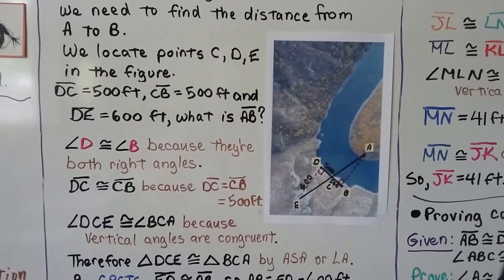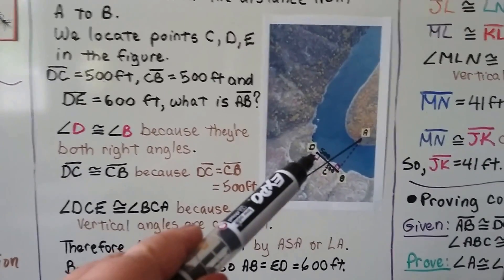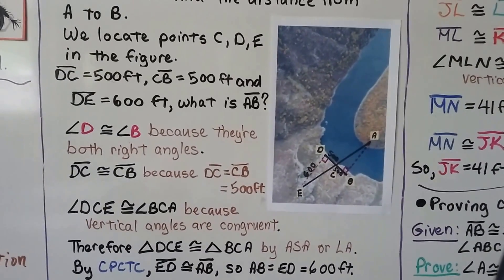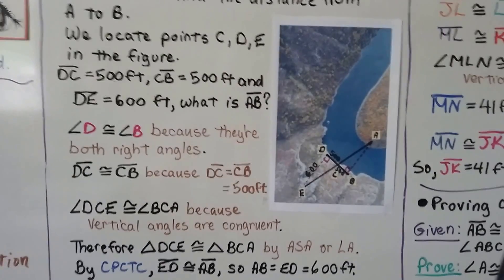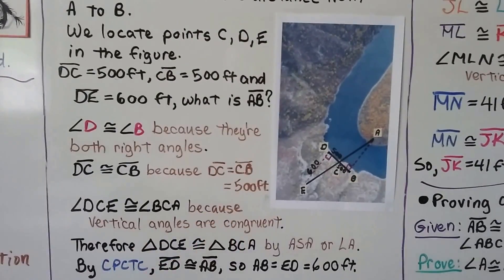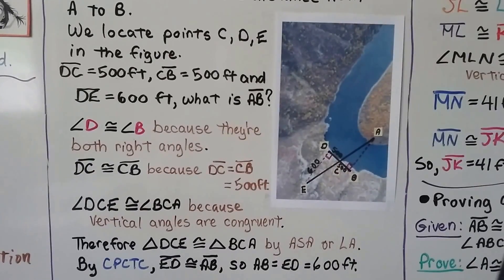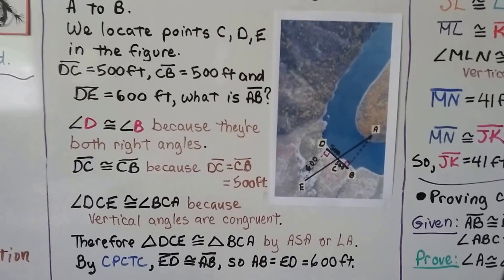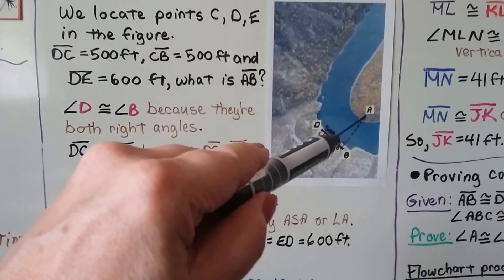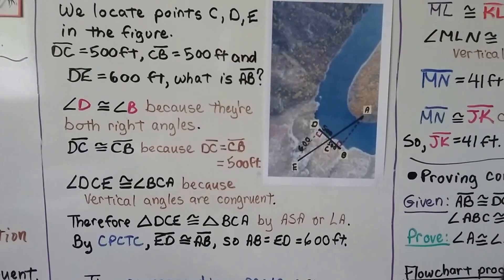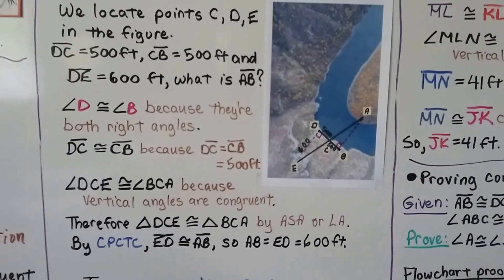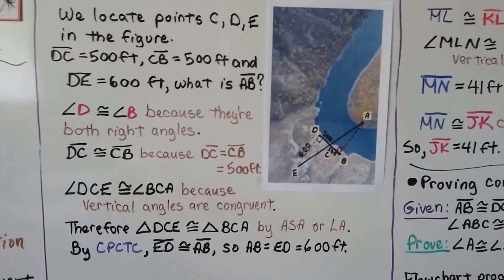Angle D and angle B are congruent because they're both right angles. Segment DC is congruent to segment CB because they're both 500 feet. And angle DCE is congruent to angle BCA because they're vertical angles. Therefore, triangle DCE is congruent to triangle BCA by ASA — angle, side, angle.